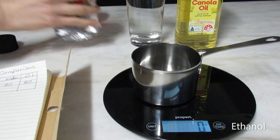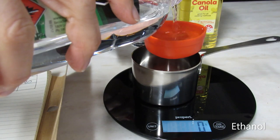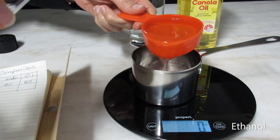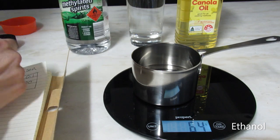Zero the scale with your container on it. Carefully measure out each liquid and pour it into the container. Record the mass and volume for each. After each liquid make sure to clean and dry the container.